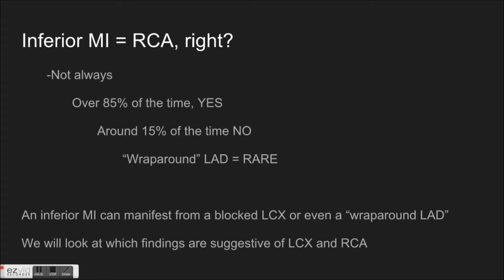First things first — inferior wall MI is commonly taught as an occlusion of the RCA. This is taught in tons of paramedic programs, critical care classes, nursing programs, et cetera. And around 85% of the time, that's true. So 85 out of 100 patients, when you see an inferior wall MI, you're looking at an occlusion of the right coronary artery.